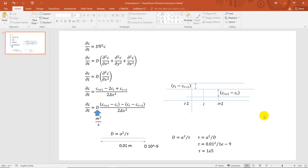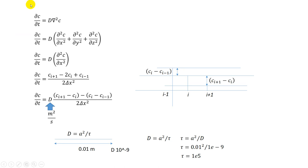Let us go into the physics of the diffusion process. Unsteady-state diffusion is defined by the differential equation where the partial derivative of concentration with respect to time equals D times ∇²c. This ∇² is divergence of the gradient of the concentration flux, which simplifies to D∇²c.